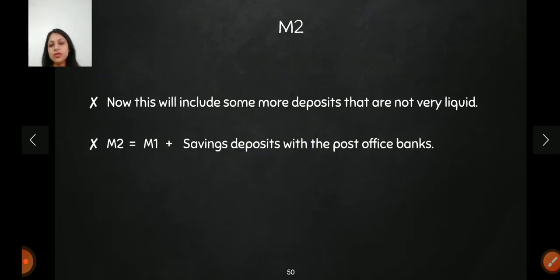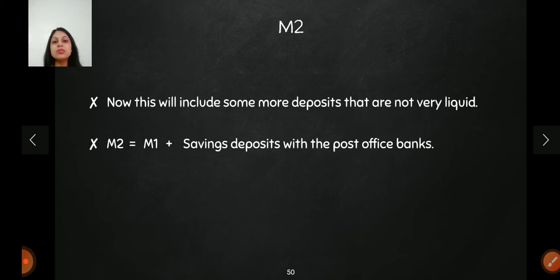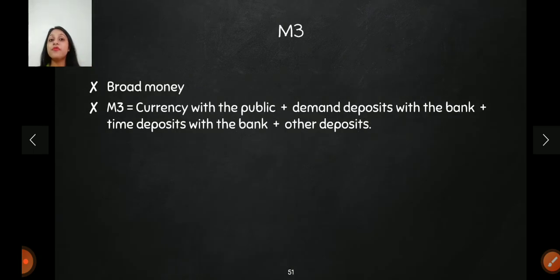Then comes M2. M2 includes everything in M1, plus savings deposits with post office banks. Savings deposits are comparatively less liquid than demand deposits — they are liquid assets, but less so compared to demand deposits. So if we include savings deposits as well, that gives us M2, the third measure of money supply.